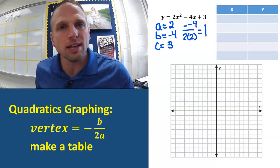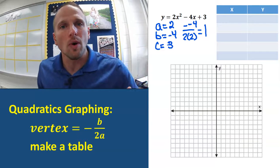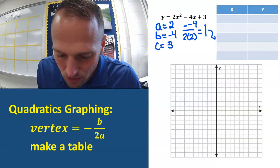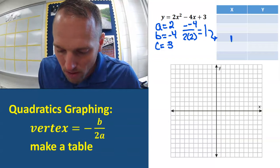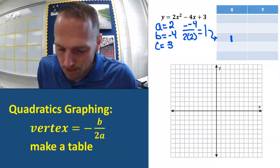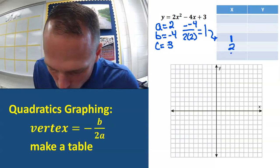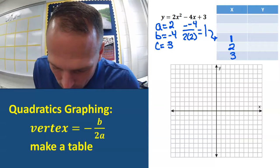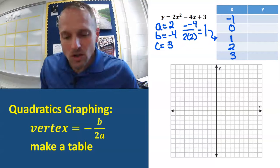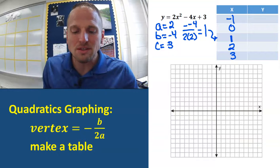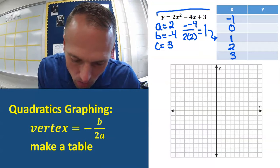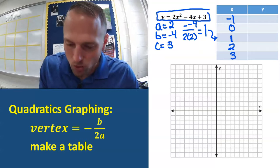Remember, the vertex is going to be the middle of our graph, the middle of our parabola. So we're going to take this x value of the vertex and put it into the middle of the table. Now let's just count up and count down for our x's: 2 and 3 going up, and 0 and negative 1 going down. Now let's go ahead and substitute each one of these numbers in for x in our equation and see what our y value is.